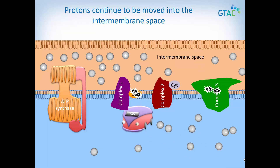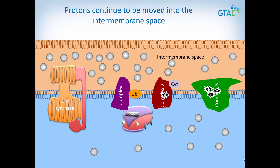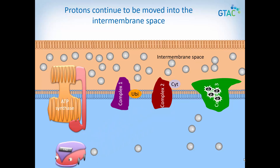FADH2 can also drop off excited electrons. You can see it drops them off at a slightly different place in the electron transport chain — it misses the first protein. As the electrons flow through the electron transport chain, more protons are pumped into the intermembrane space. FADH2 then moves off to pick up a new load of electrons from the Krebs cycle. Pause the video here so you can model this on your poster.